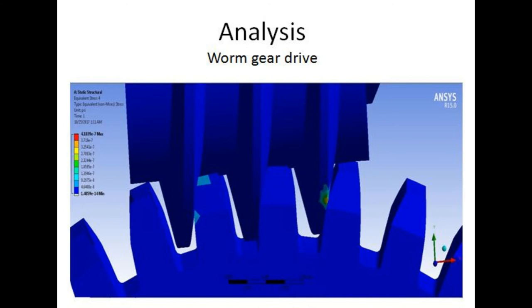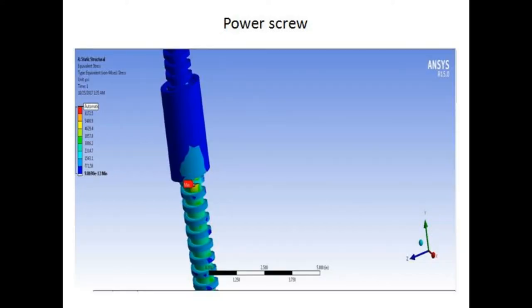Now we are doing analysis part. The analysis of worm gear drive: we found that design is safe against Von Mises stress. Here is the analysis of power screw and frame.